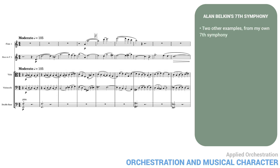Here are two other examples from my own seventh symphony that we can use to examine musical character. At the beginning of the piece, I wanted to suggest a noble, but still rather warm character. The foreground — the calm legato melody in the horn — gives a sense of openness or freedom. The singing legato accompaniment in the violas and celli adds warmth. The flute counterpoint enriches the horn line. The tempo is moderate, no rushing. Let's listen.